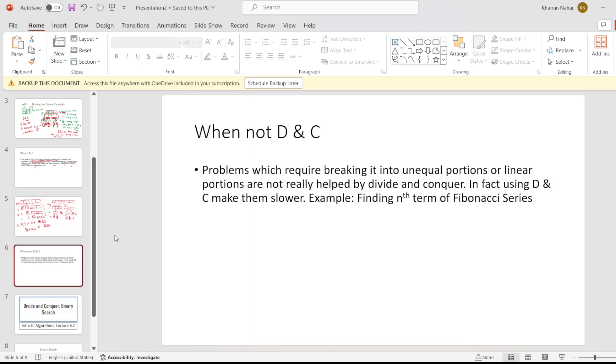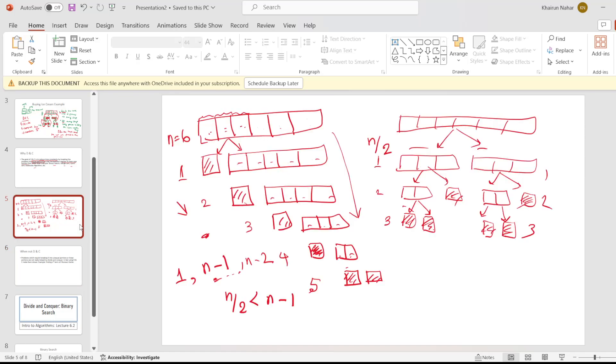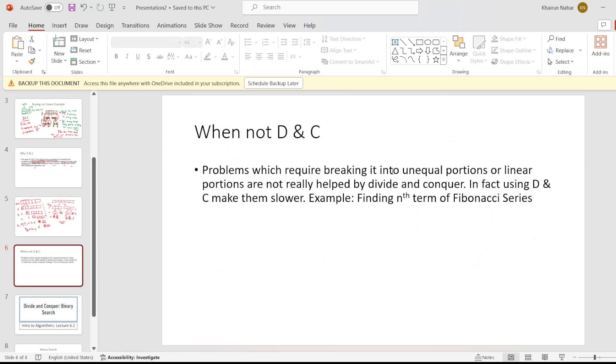Now the question is: when not divide and conquer? It won't make it faster. In fact, it will make it slower. Because recursion is going to be used, and space complexity is going to increase. So I don't have to use blindly divide and conquer. I will try to figure out if the problem can be solved by dividing it into equal portions.